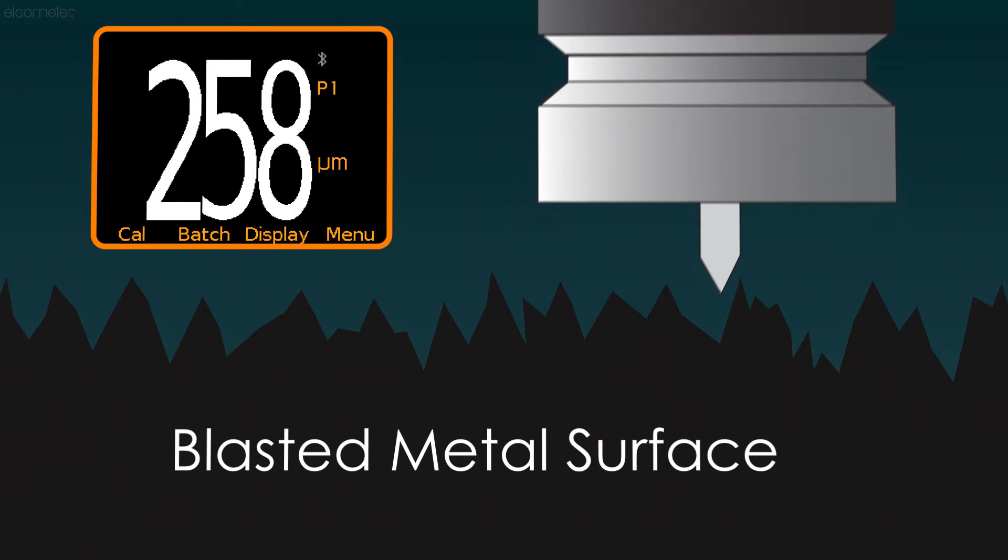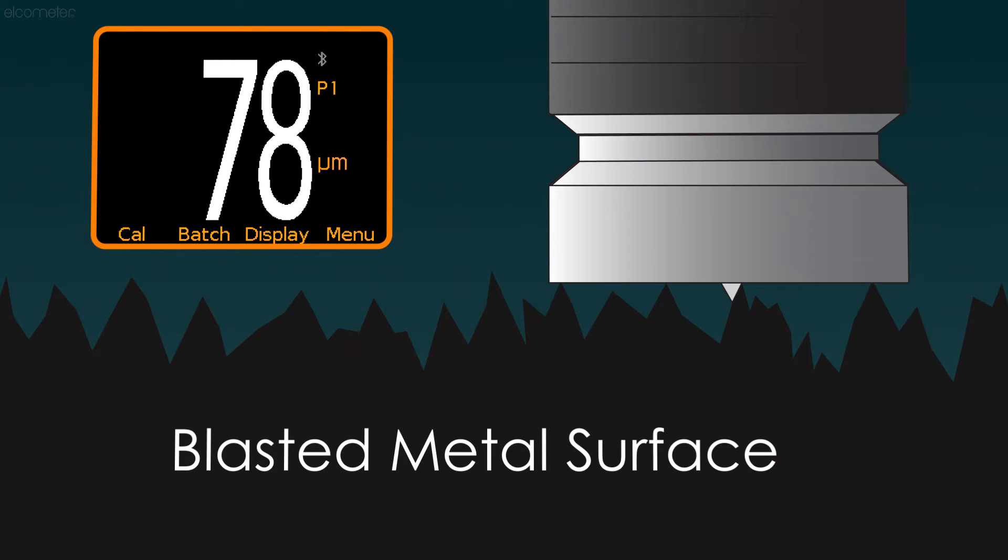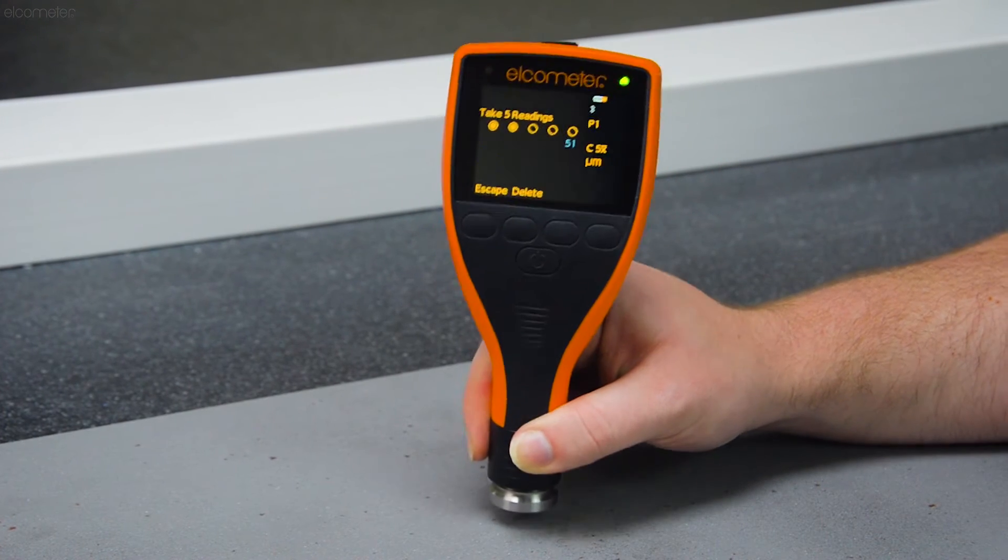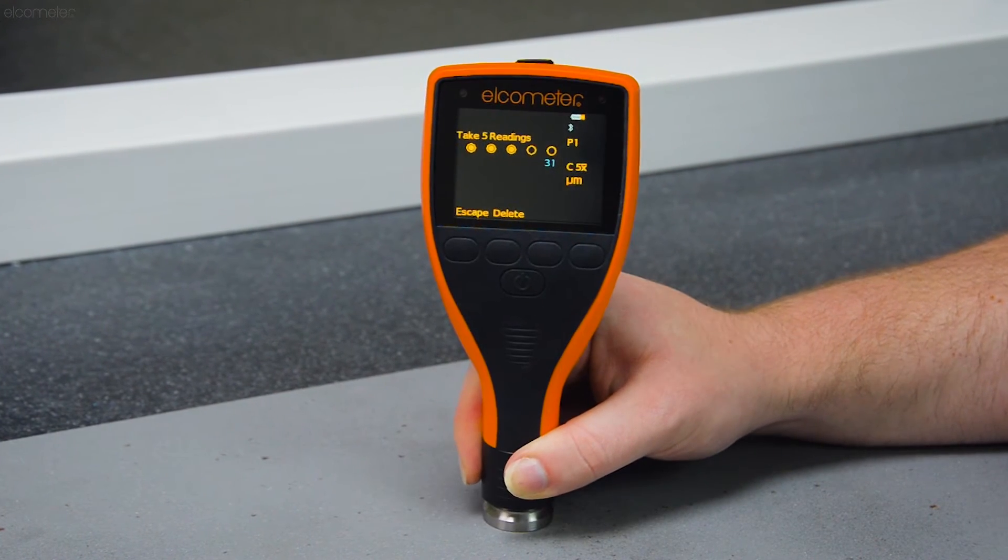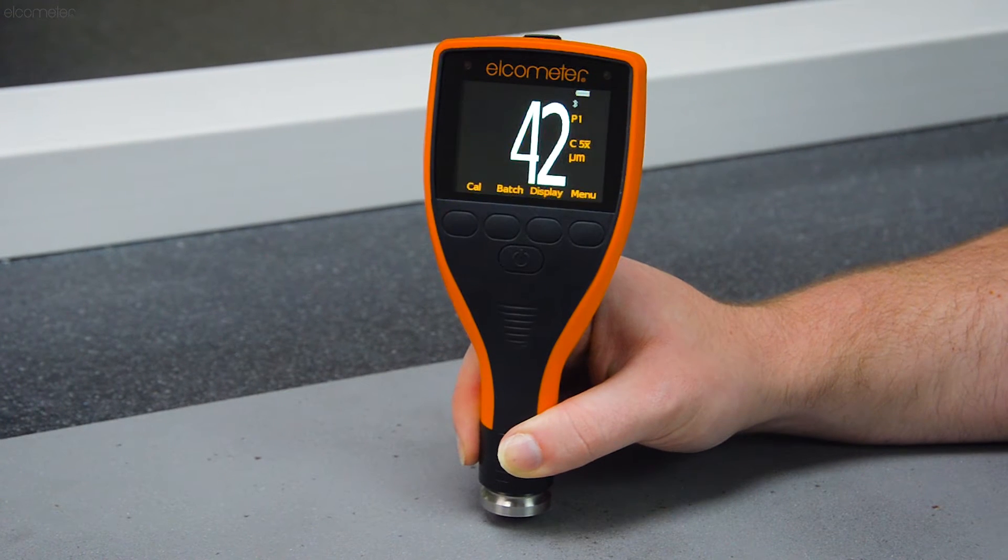As the measurement point is not necessarily at the very bottom of the valley and could be somewhere on the slope, so to speak, the user takes either 5 or 10 individual measurements, after which the gauge then provides a reading.